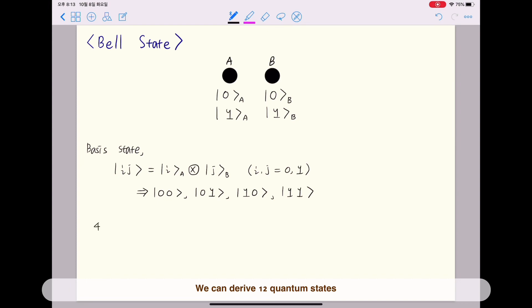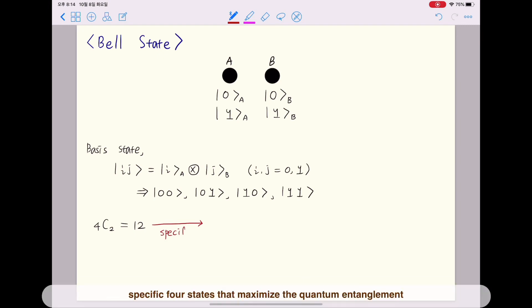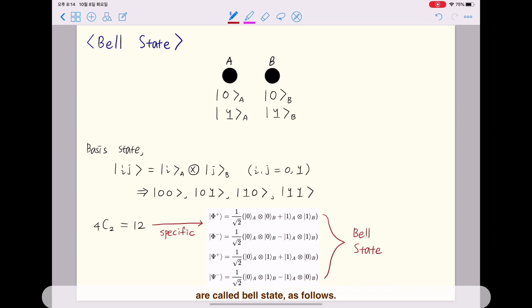We can derive twelve quantum states from the superposition of two of the four product states. Specific four states that maximize the quantum entanglement are called bell states.